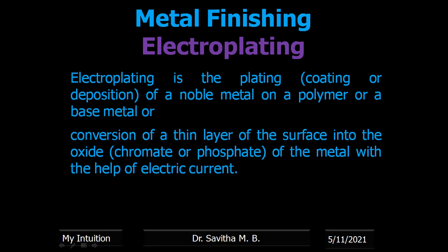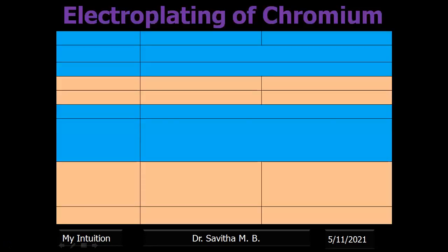For the electroplating process, we take the metal to be coated — that is the article — as the cathode, and the metal from which you have to coat is taken as the anode. A suitable electrolyte with connections and additives is added, and then we do the electroplating work. We have discussed all this in detail in a previous video.